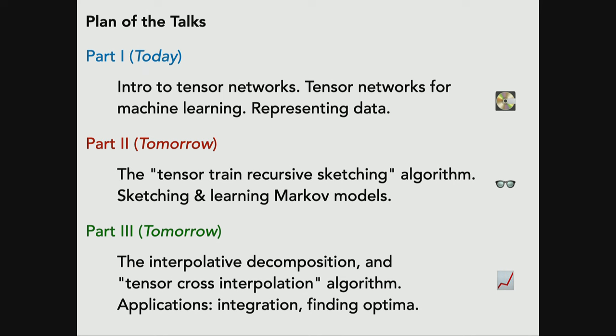We'll see some really novel things. For example, neither algorithm will have a gradient in it — no gradient descent, it's all linear algebra. The second algorithm is called tensor cross interpolation, and there's no data involved. It's more like reinforcement learning where you just have the ability to explore an environment — in this case, a function or piece of code the algorithm can call and query to learn all the outputs from just a few evaluations. That's an active learning type of idea.